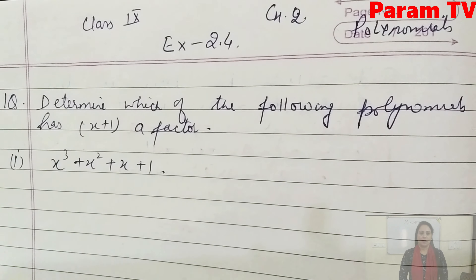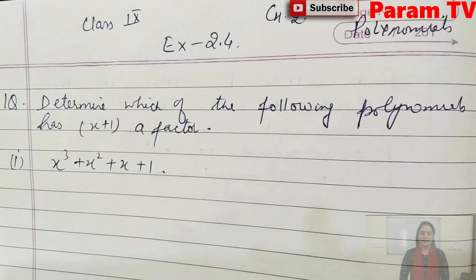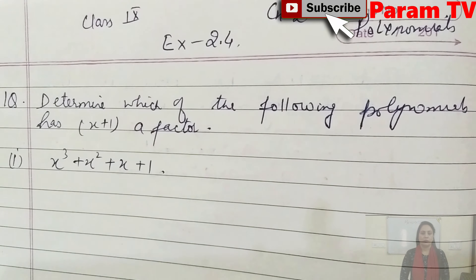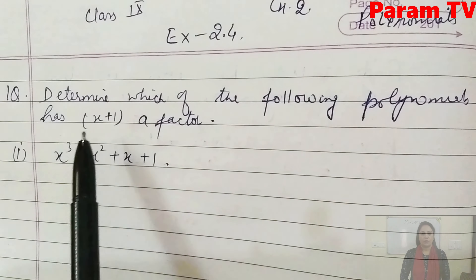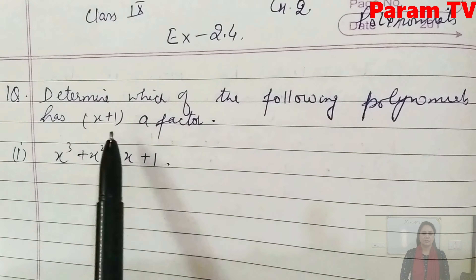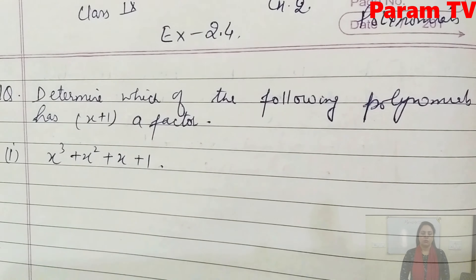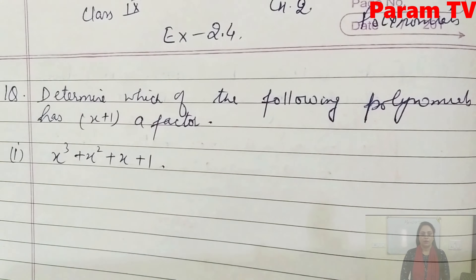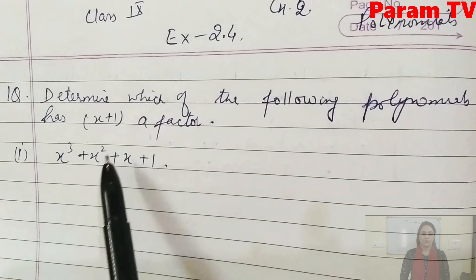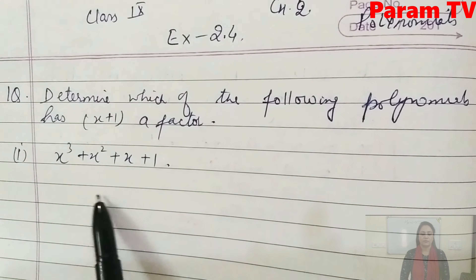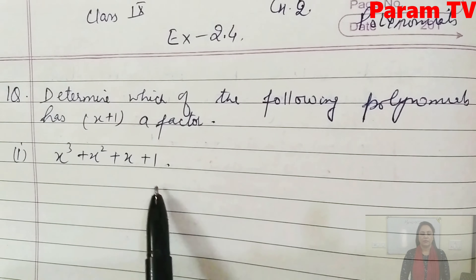Hello everyone, let's start the next exercise 2.4, chapter 2, polynomials for class 9. The first question is: determine which of the following polynomials has x+1 as a factor. Some polynomials are given — first, second, third part. We need to check for all of them whether x+1 is their factor or not.